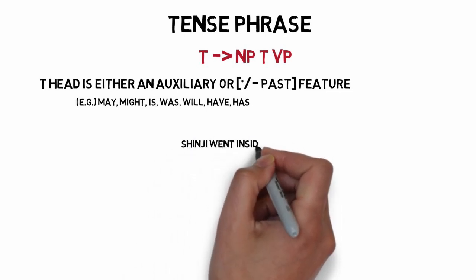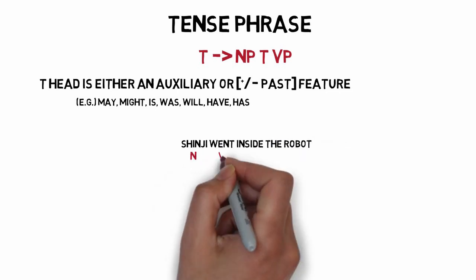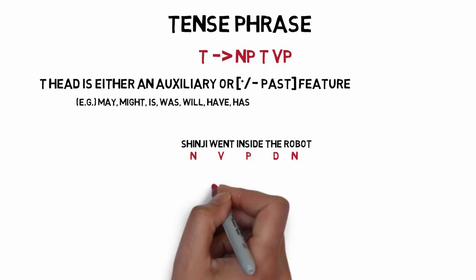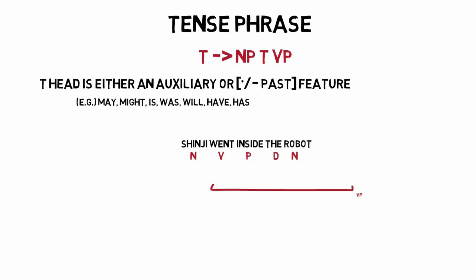Shinji went inside the robot. First, we'll mark the part of speech for each word. Then, let's mark out our phrases. A good way to start is by identifying the verb phrase. In English, it's usually everything other than the subject, which is usually the start of the sentence. So in the sentence 'Shinji went inside the robot,' Shinji is the subject, and everything else is called the verb phrase.